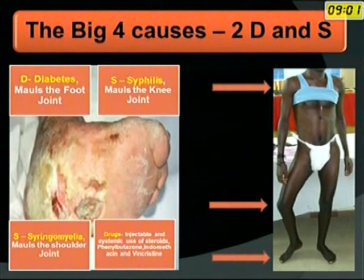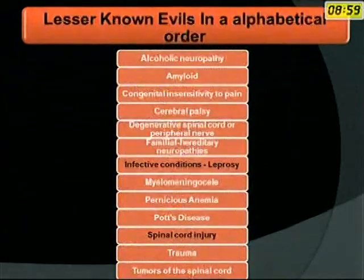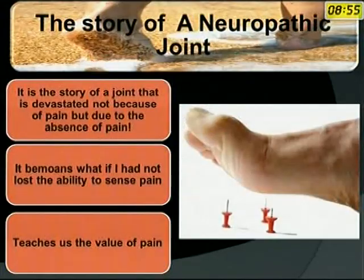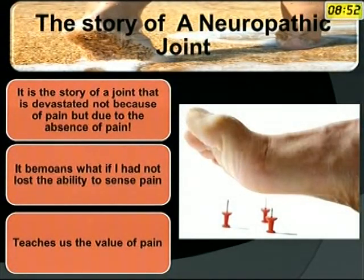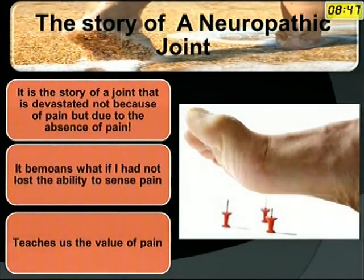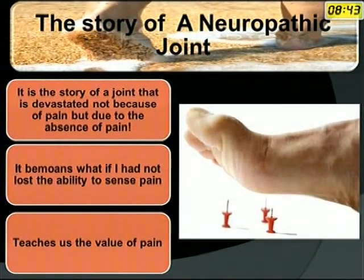Diabetes, syphilis, syringomyelia, certain drugs and lesser-known evils — in alphabetical order — are known to numb the pain and evolve a joint called neuropathic joint. The story of which is about devastation, not because of pain, but due to absence of pain. It teaches us the value of pain.